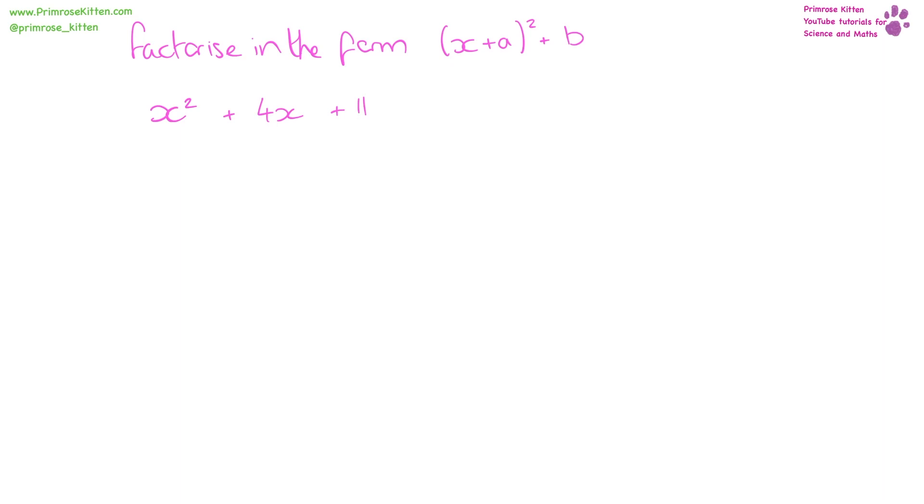So what we need to do is work out what things we can add to make four that are the same. That's going to be two and two. So in our brackets we need to have x plus two squared.